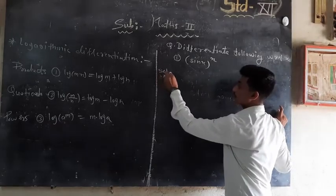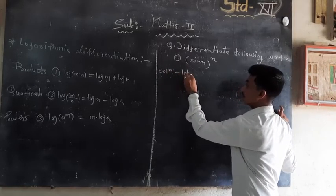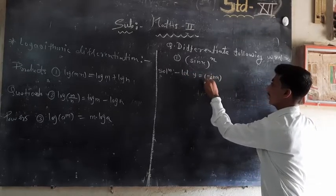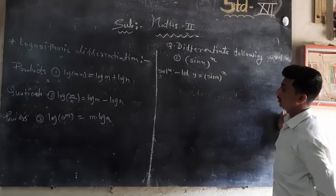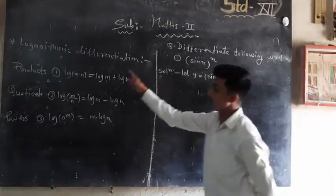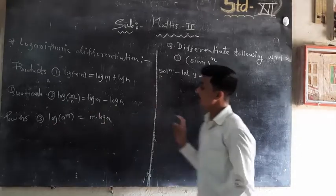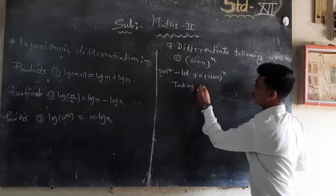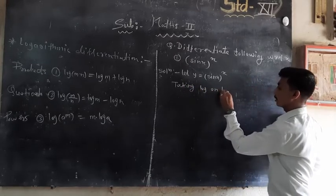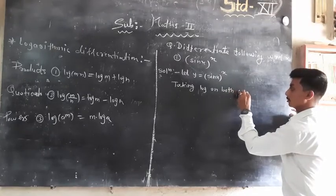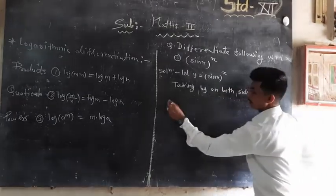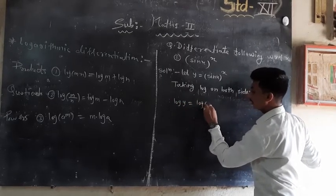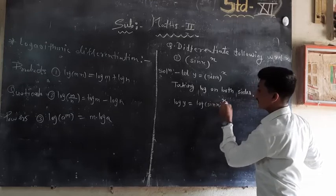Solution: first, we take a name. Let y = sin(x)^x. Since this is a power of a function, we simplify by using the third rule. So we take the natural log on both sides. Therefore, we write log(y) = log(sin(x)^x).